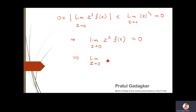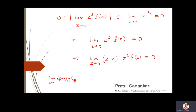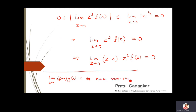This means that lim(z→0) of (z − 0)·z²f(z) = 0, where I've separated one z outside. This reminds me of a theorem: if lim(z→a) of (z − a)·g(z) = 0, then z = a is a removable singularity of g(z).